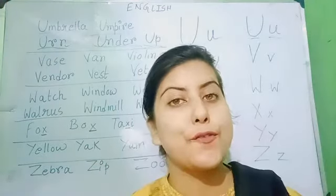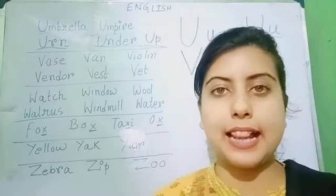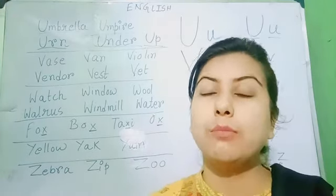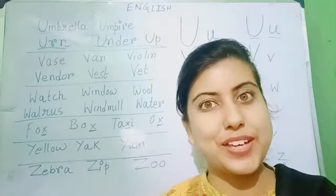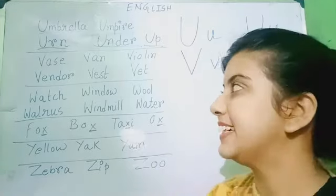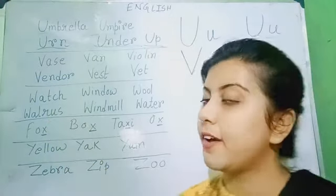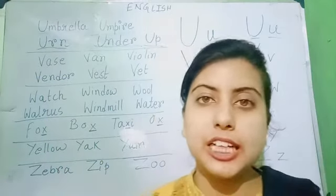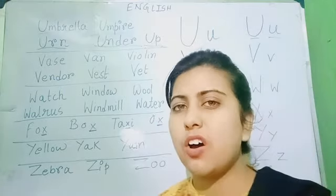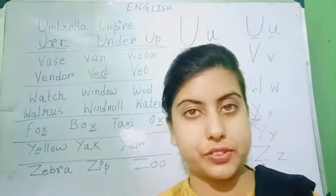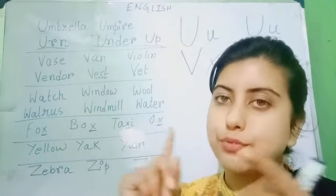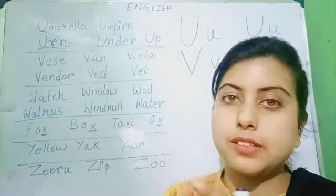Violin. V-I-O-L-I-N. Violin. This is a musical instrument. We can play violin. Next, vendor. V-E-N-D-O-R. Vendor. Vendors are sellers. They sell various things like fruits, vegetables, etc.